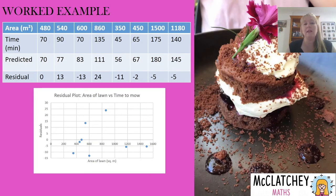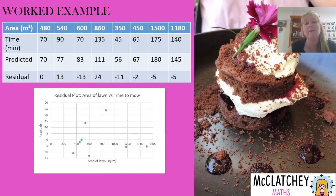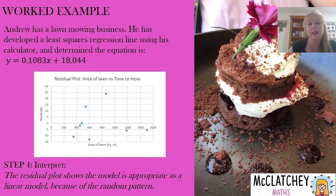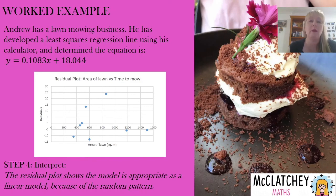I've done this here now — on the x-axis I've got the area of the lawn, and on the y-axis are the residuals calculated in my table, with some above the x-axis and some below. Now it's time to interpret the relationship. Our residual plot shows that the model is quite random — there's a random pattern and I couldn't join the dots to form any recognisable shape. Therefore it is an appropriate linear model, and that's all we need to do: interpret the residual plot once we've developed it.